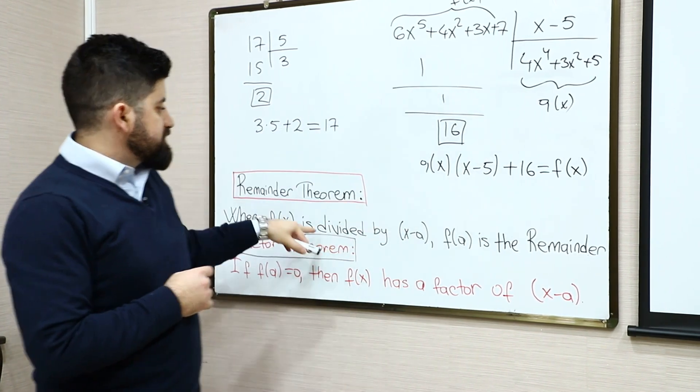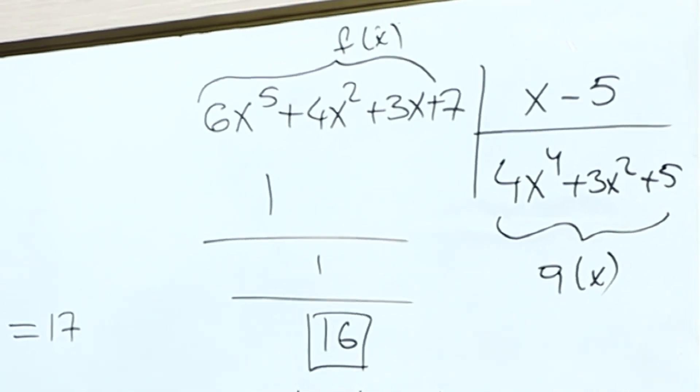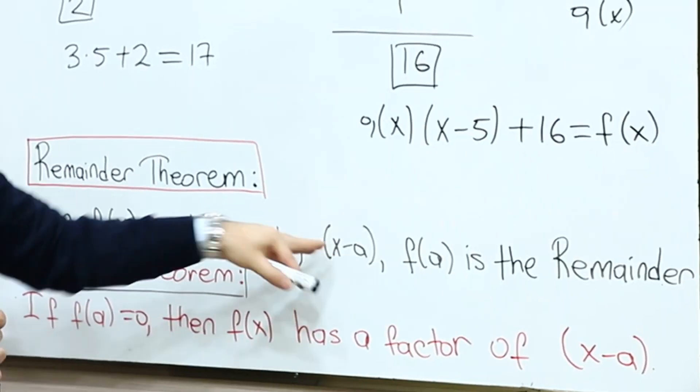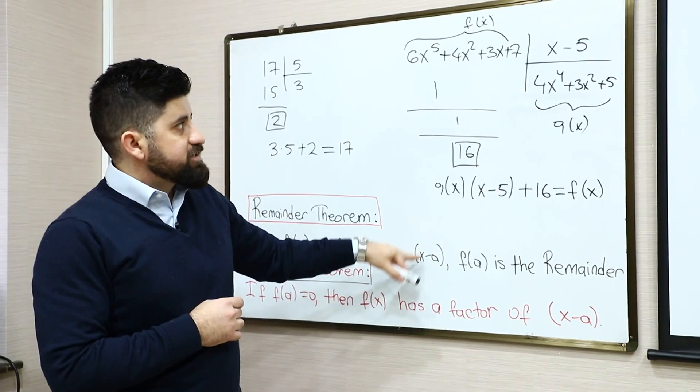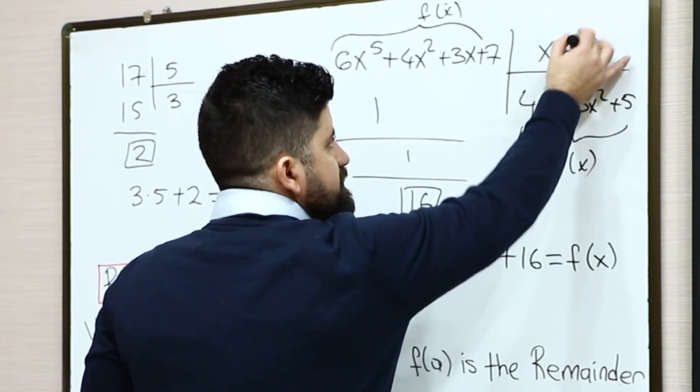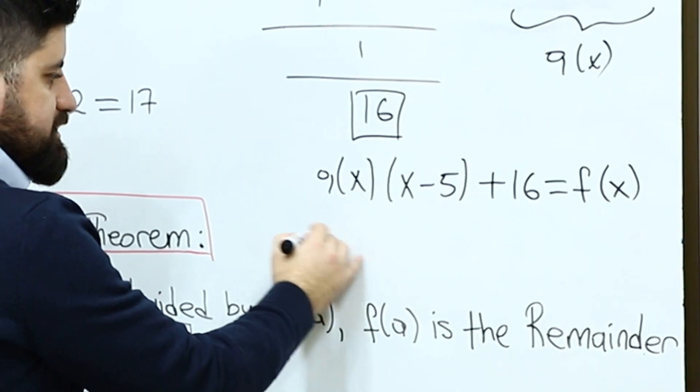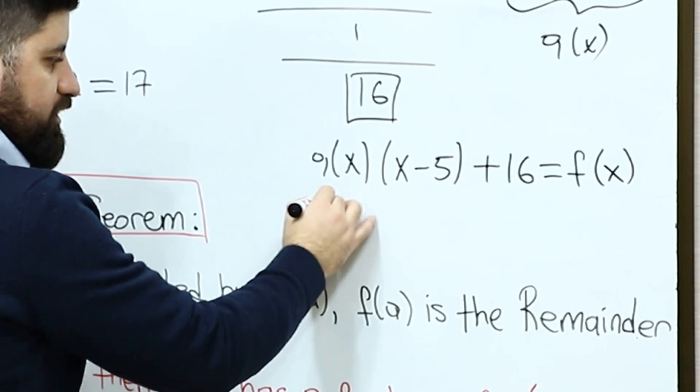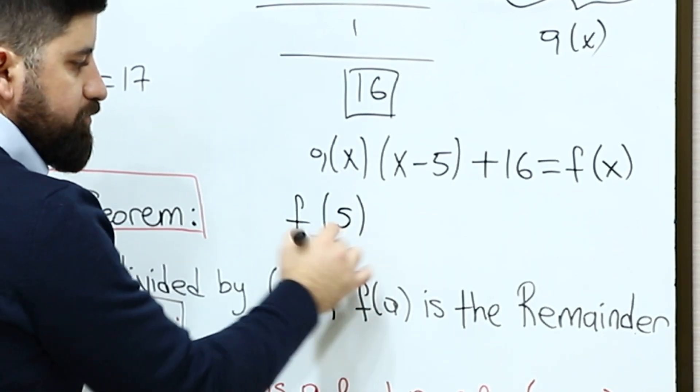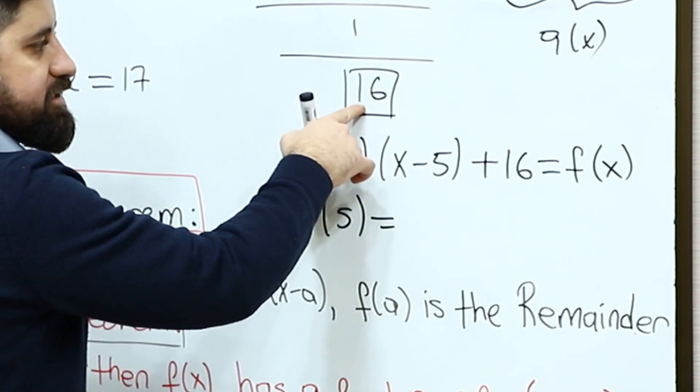x minus 5 is like we just divided the f(x) to x minus 5, which the remainder theorem states x minus a is here x minus 5. So this 5 is going to be our a. That means when we just put this like f(5) and we just plug this 5 in x, we have to get the 16.